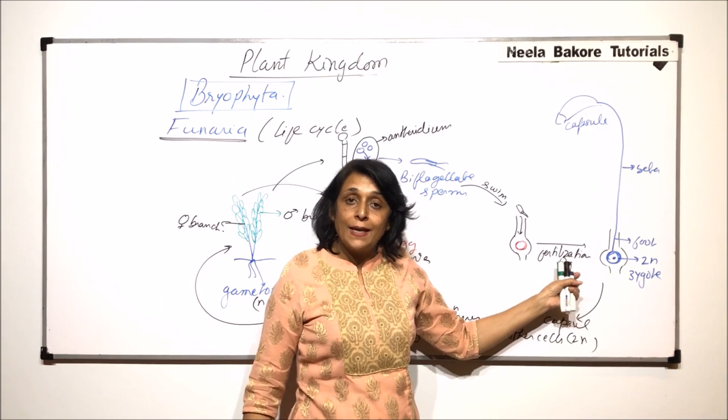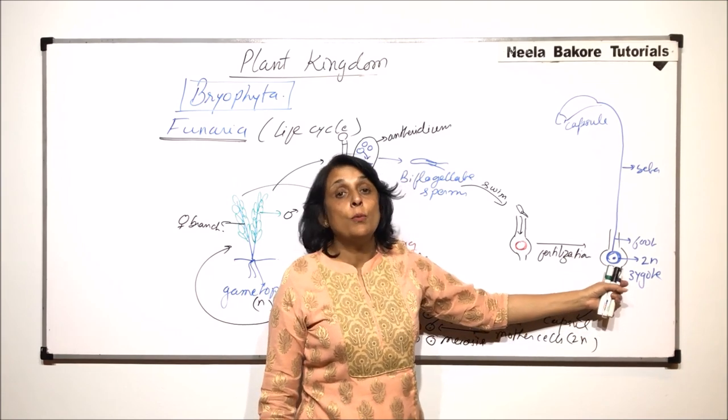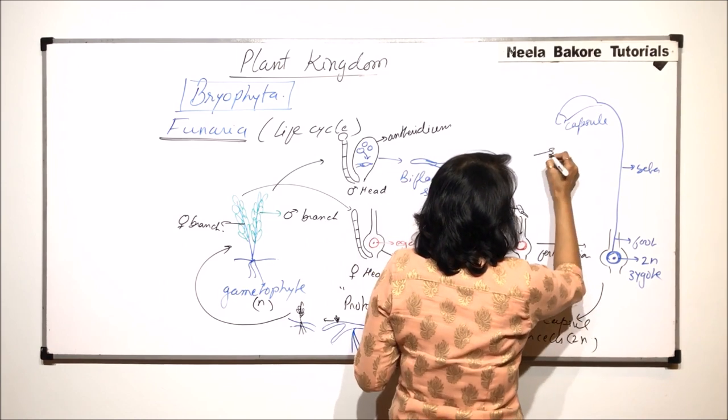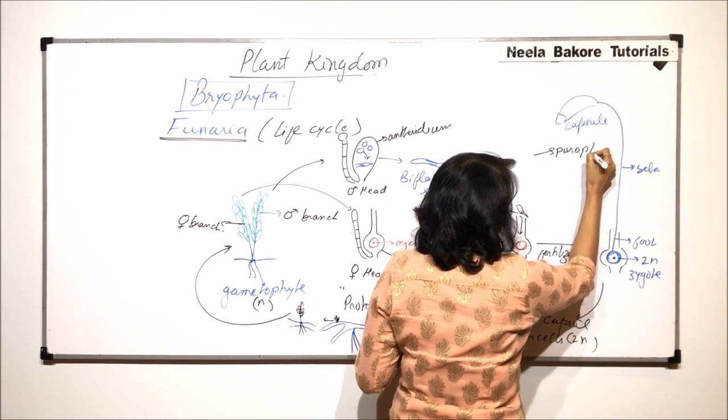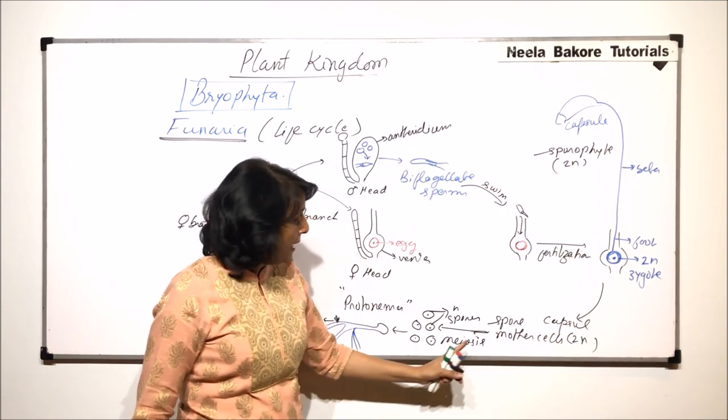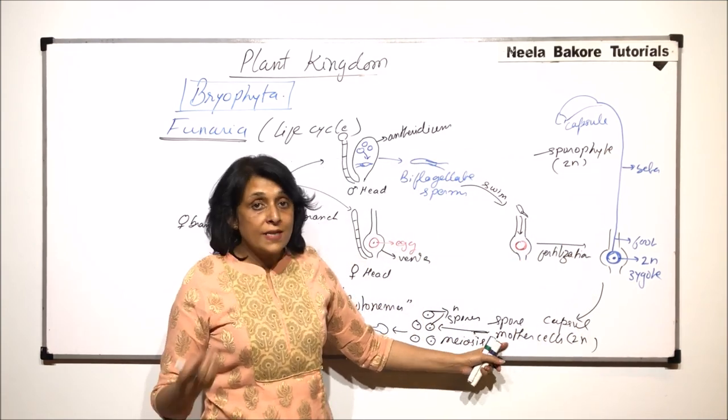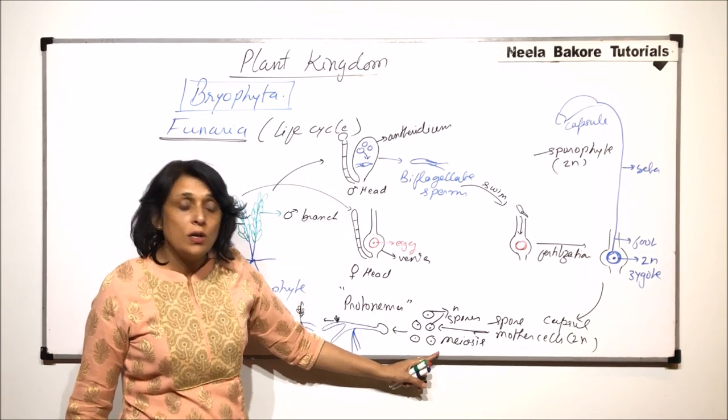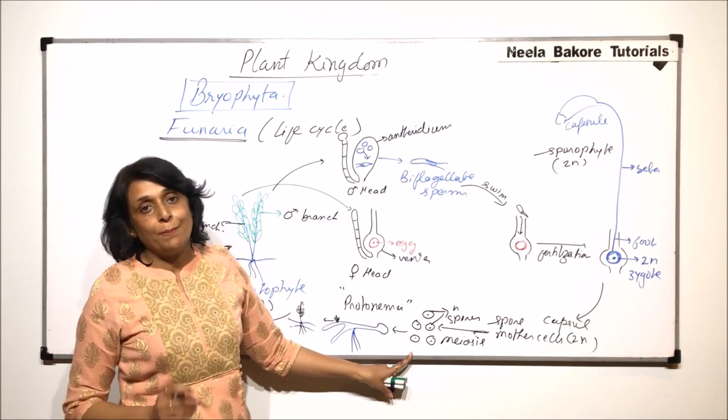After fertilization, zygote is formed which is diploid. And the complete sporophyte, this is the sporophyte which is also diploid. The spore mother cells which are inside the capsule, they are also diploid. They undergo meiosis to produce the haploid spores.